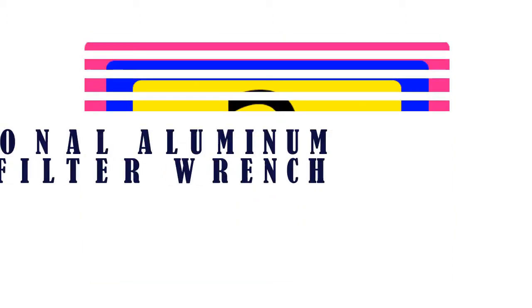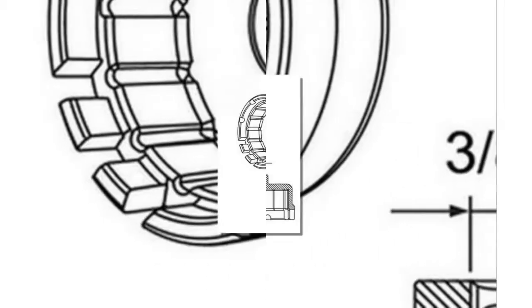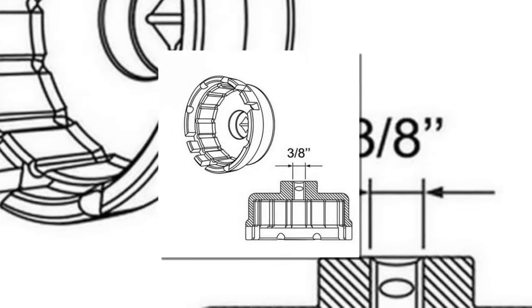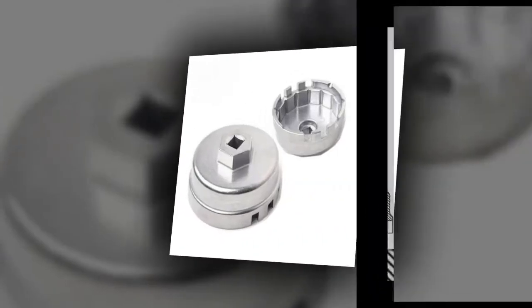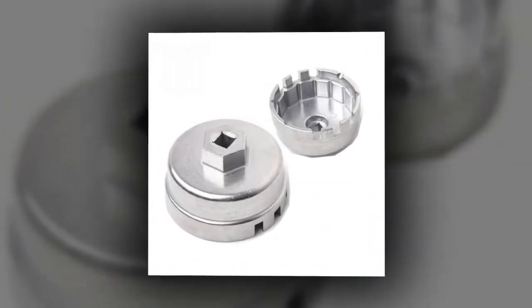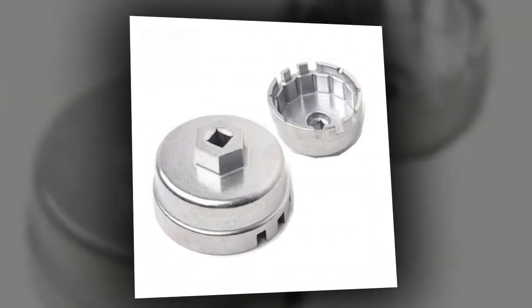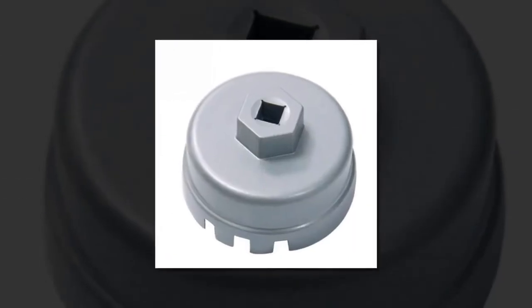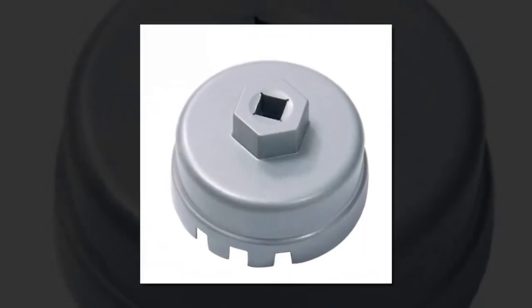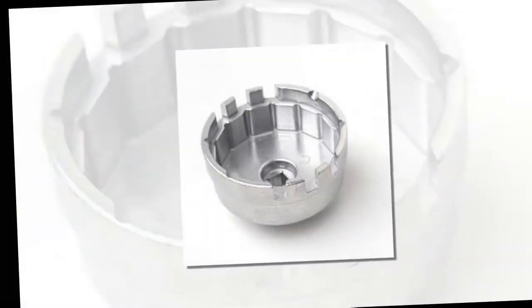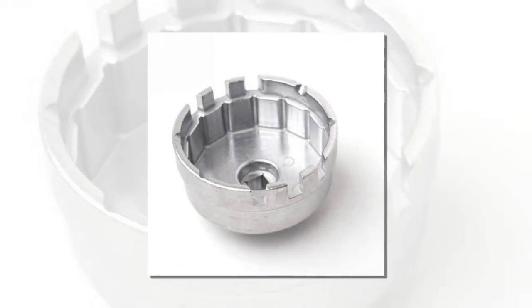Item number two is a professional aluminum car oil filter wrench. Brand name Echgo. One hundred percent brand new and high quality, easy for installation and use, great replacement for old oil filter wrench. Unit type: piece. Package weight: 0.14 kilograms, 0.31 pounds.